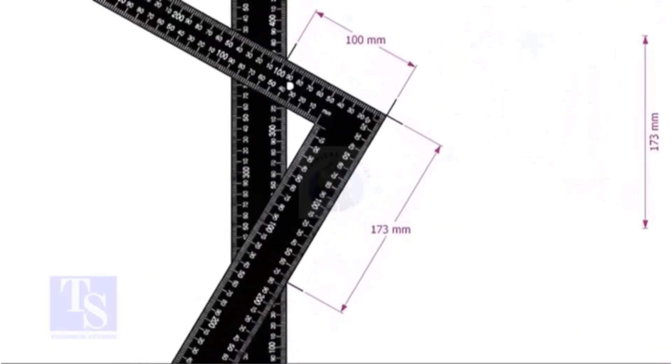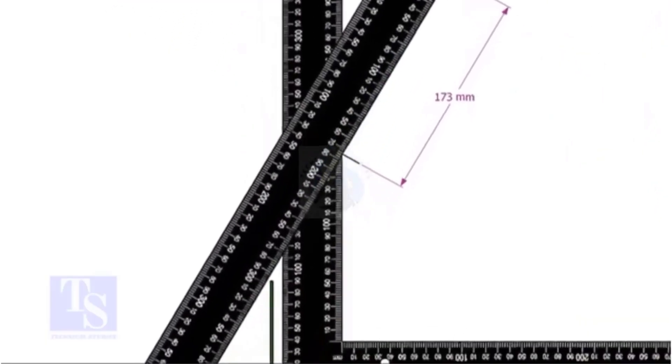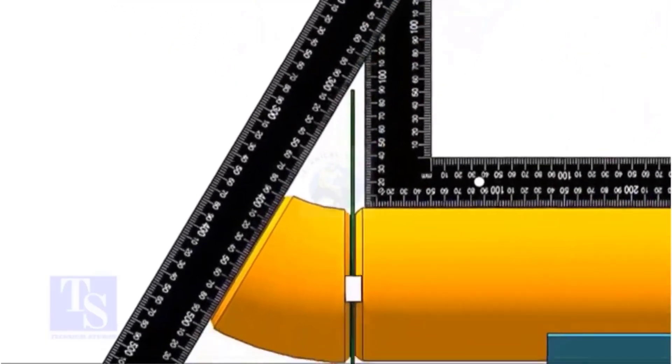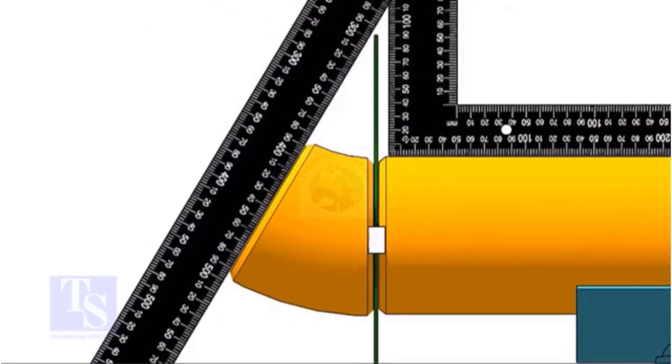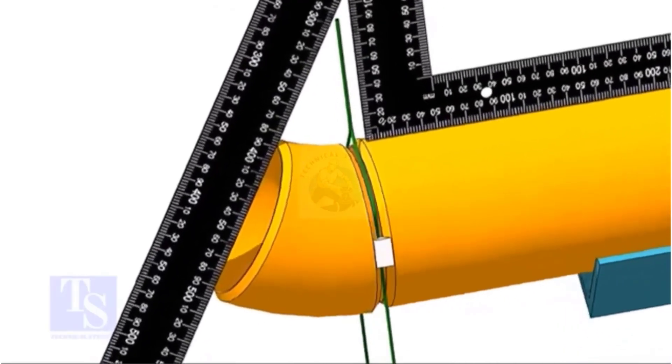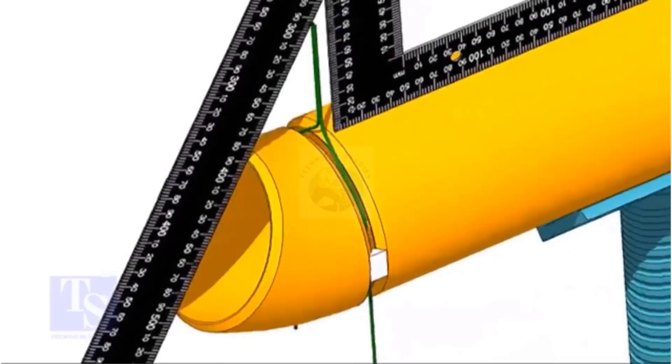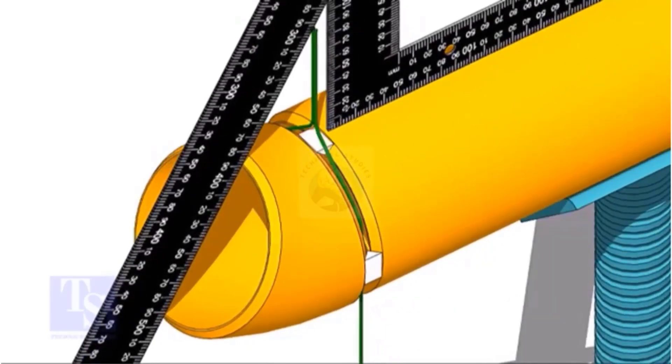If required, rotate the elbow so the markings match the vertical face of the right angle on the pipe. Make sure the edge of the right angle touches both edges of the elbow. Tack weld the top and bottom of the joint.